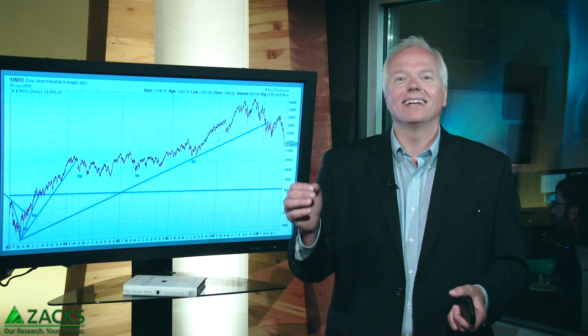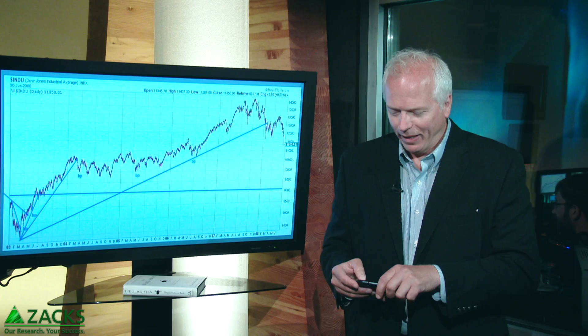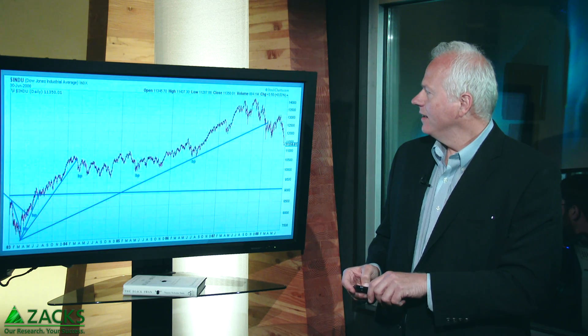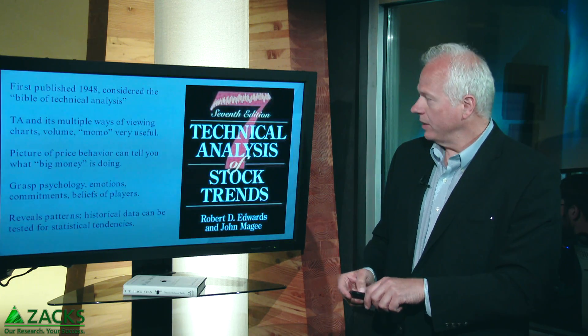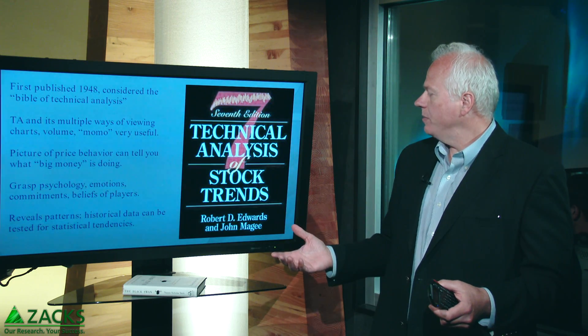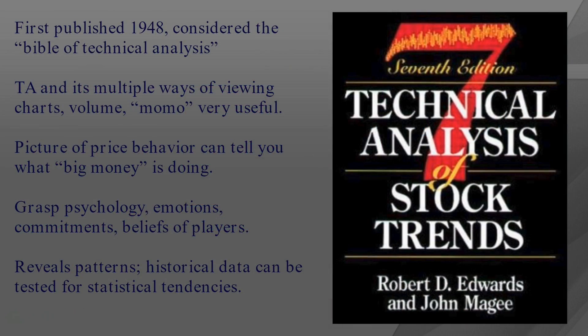So are trend lines useful? We'll examine that, and we'll also examine if they are mathematically sound. Edwards and McGee wrote the Bible of technical analysis. This book was originally published in 1948 — this copy here is the seventh edition, and I believe they're at least on the tenth edition right now. Technical analysis, TA for short.